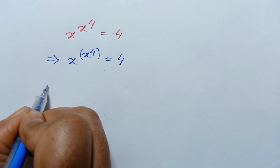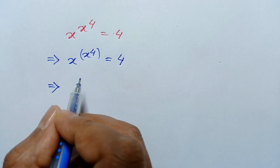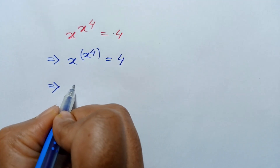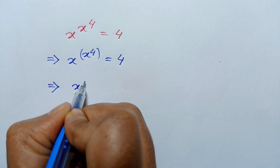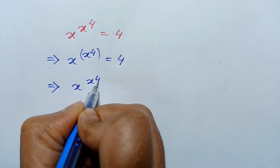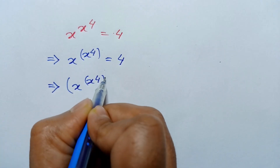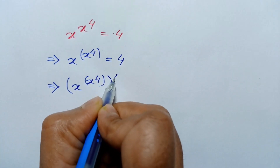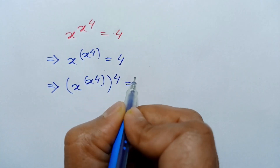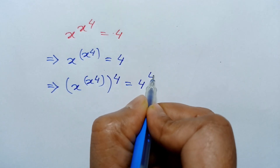Now raising both sides to the power 4, we will have x to the power x to the power 4, and whole to the power 4, is equal to 4 to the power 4.